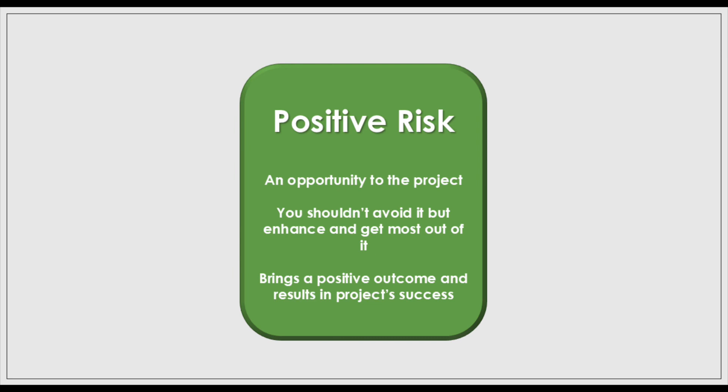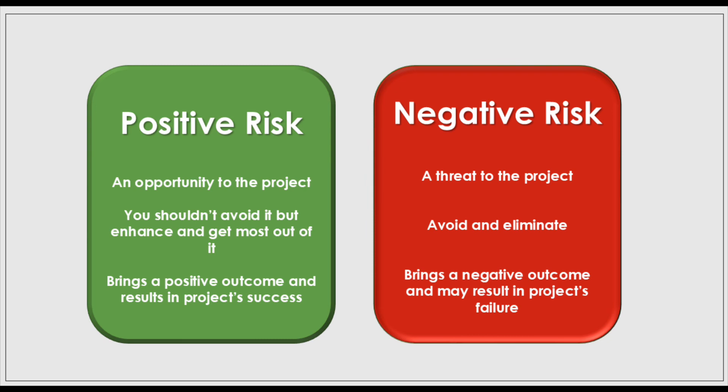There are two types of risk in project management: positive and negative. Positive risk, also known as an opportunity, refers to a potential future event that, if it occurs, could have a beneficial impact on the project's objectives — offering opportunities for advancement, improvement, or gain. Negative risk, often termed a threat, denotes a potential future event that, if it occurs, could have an adverse impact on the project's objectives, posing challenges that might impair progress, increase costs, cause delays, or affect quality.